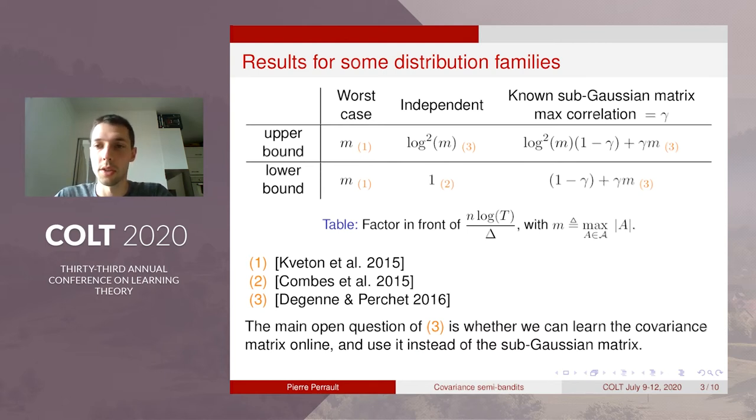Considering a sub-Gaussian assumption on the outcomes with a known sub-Gaussian matrix, and they used the maximum correlation coefficient gamma with respect to this matrix to express the lower bounds and the upper bounds.